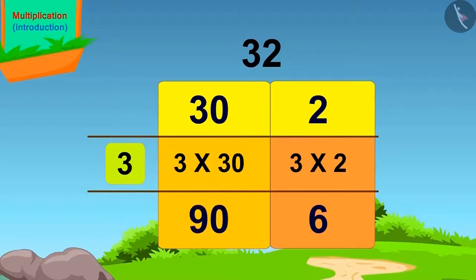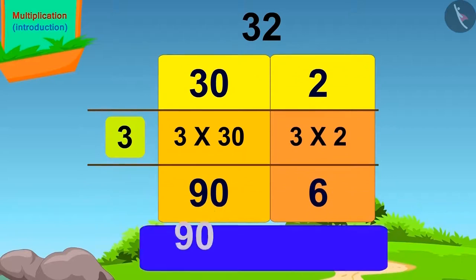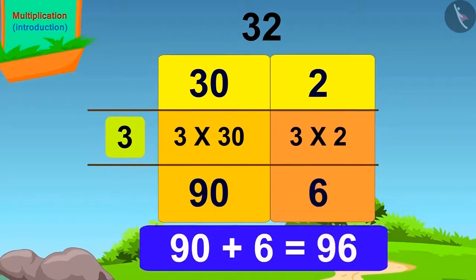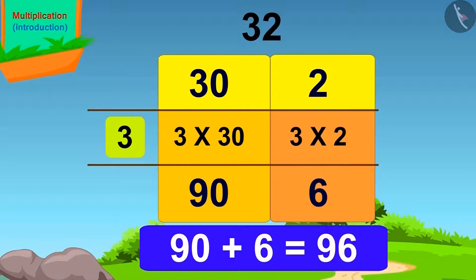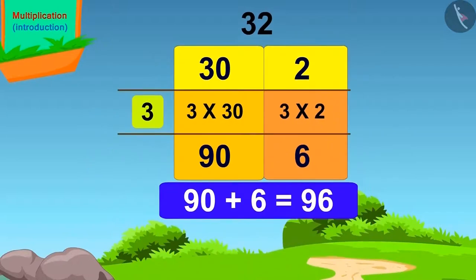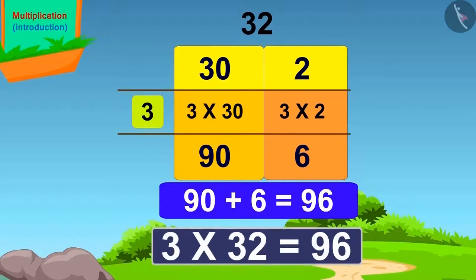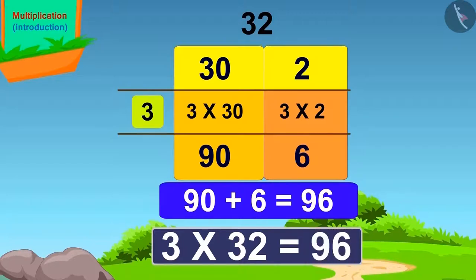Now it's very easy. On adding 6 and 90, we get 96. This way, we got our answer — 3 times 32 is 96. There were a total of 96 ants.